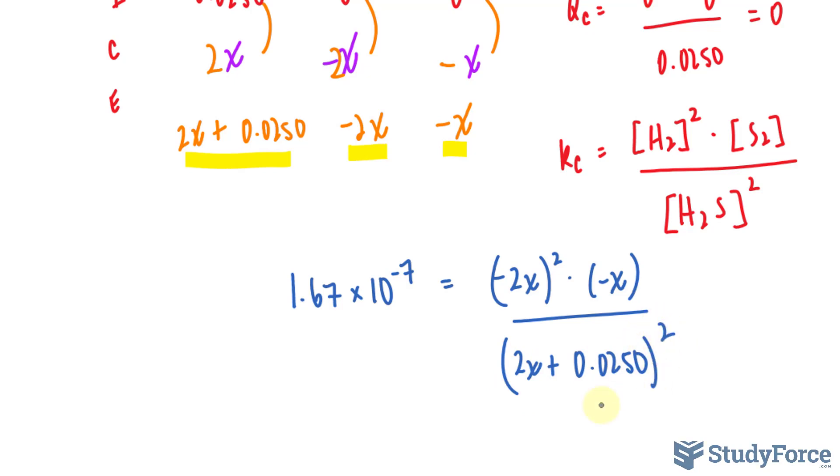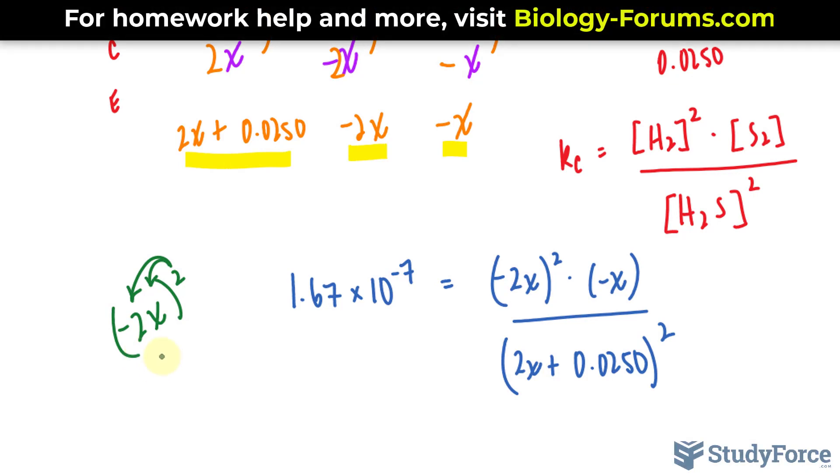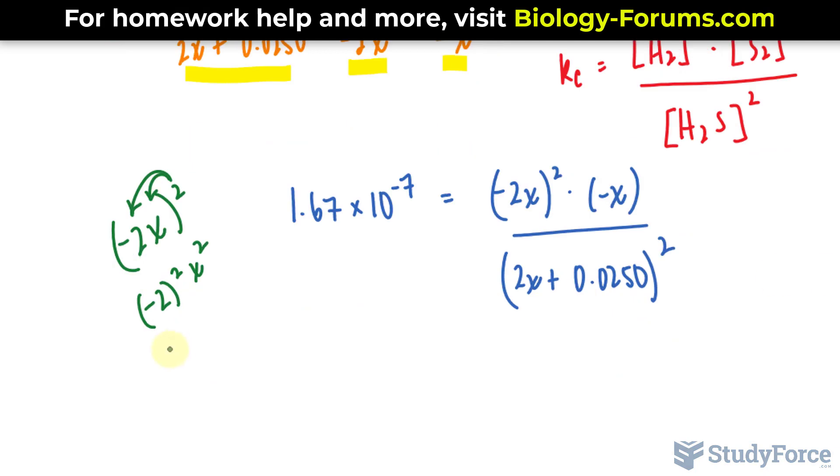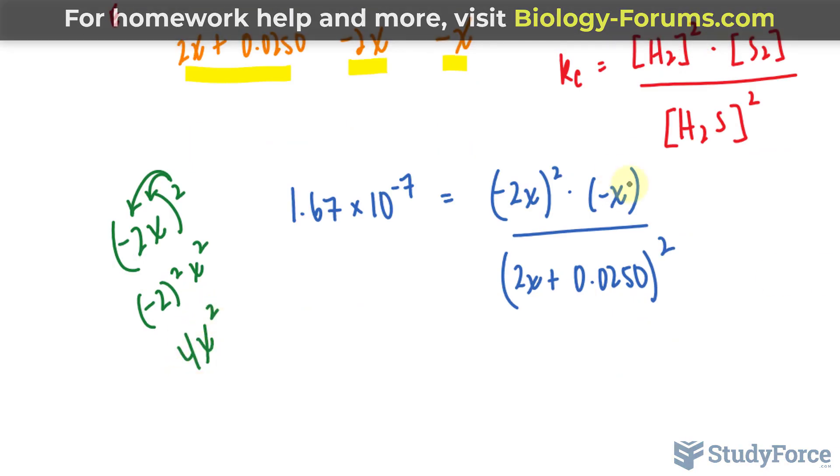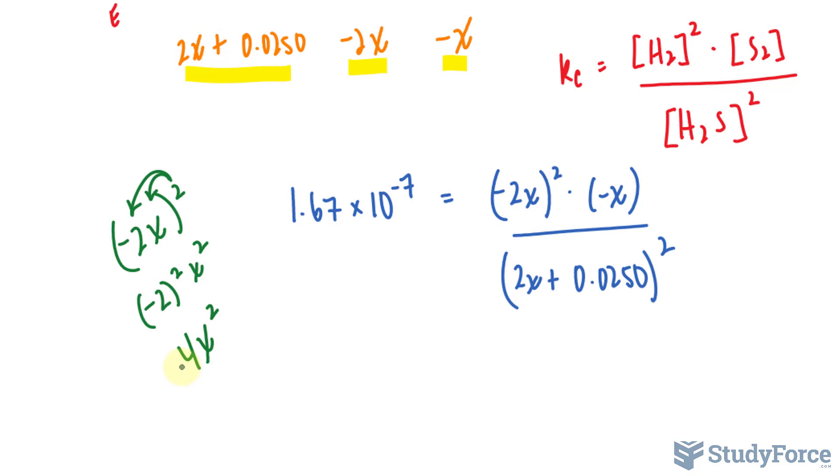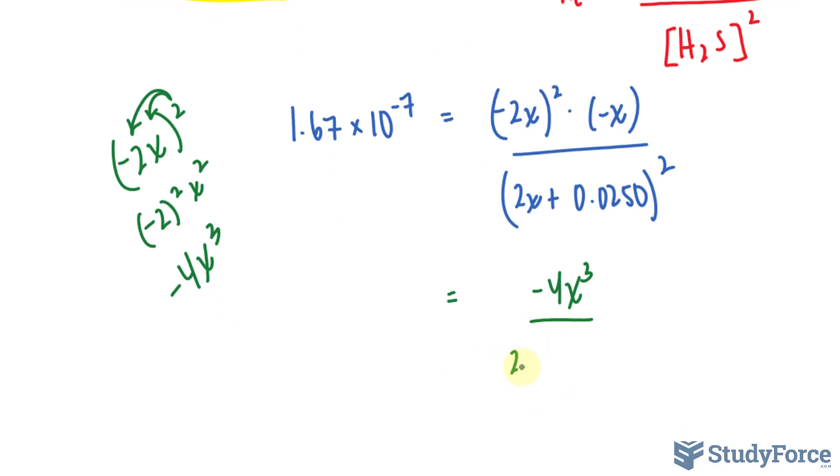Let's try to simplify this a little bit further. At the top, we have negative 2X all being raised to the power of 2. So we distribute this power of 2 to the two factors inside. Negative 2 raised to the power of 2, and X raised to the power of 2 gives us 4X squared. And that's being multiplied to negative X, so it's negative 4X cubed. I'll replace this part with negative 4X cubed over 2X plus 0.0250 raised to the power of 2.